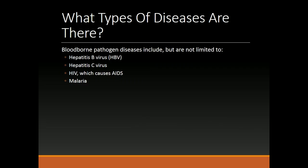What types of diseases are there? Bloodborne pathogen diseases include, but are not limited to: Hepatitis B virus (HBV), Hepatitis C virus, HIV (which causes AIDS), and Malaria.